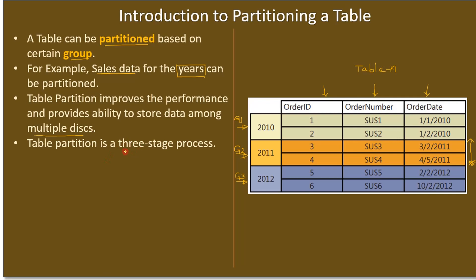Table partition is a three-stage process. First, we need to create a partition function, which we will see in the next video. After that, we have to define a partition scheme. The partition scheme links the partition function and knows how to group the data by means of groups. Then, use the partition scheme on the table to actually perform the table partition.